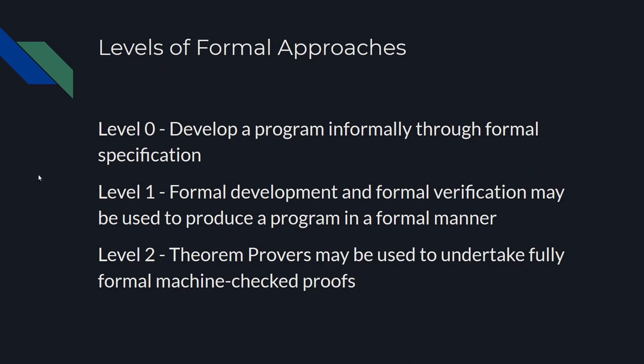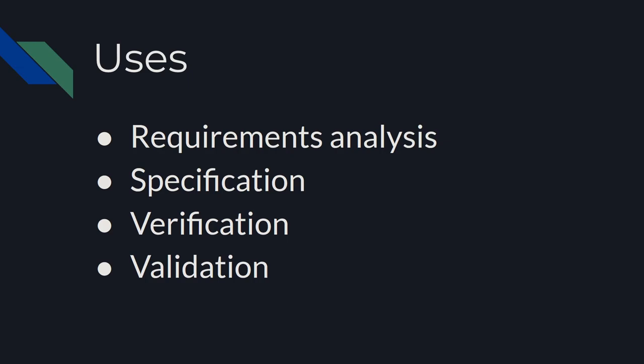Formal approaches can be used at a few levels. Level 0 is when formal specification might be undertaken to develop a programme from it informally. Level 1 is when formal development and formal verification may be used to produce a programme in a formal manner. Whereas in level 2, theorem provers may be used to undertake fully formal machine-checked proofs. Some uses of formal approaches are in specification, development, verification, validation, and many more.